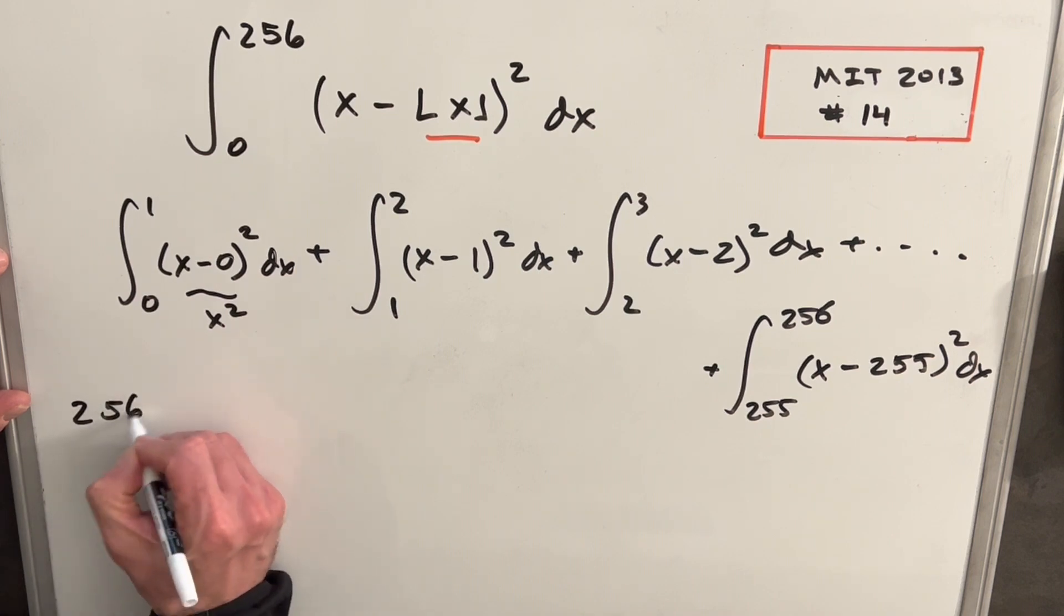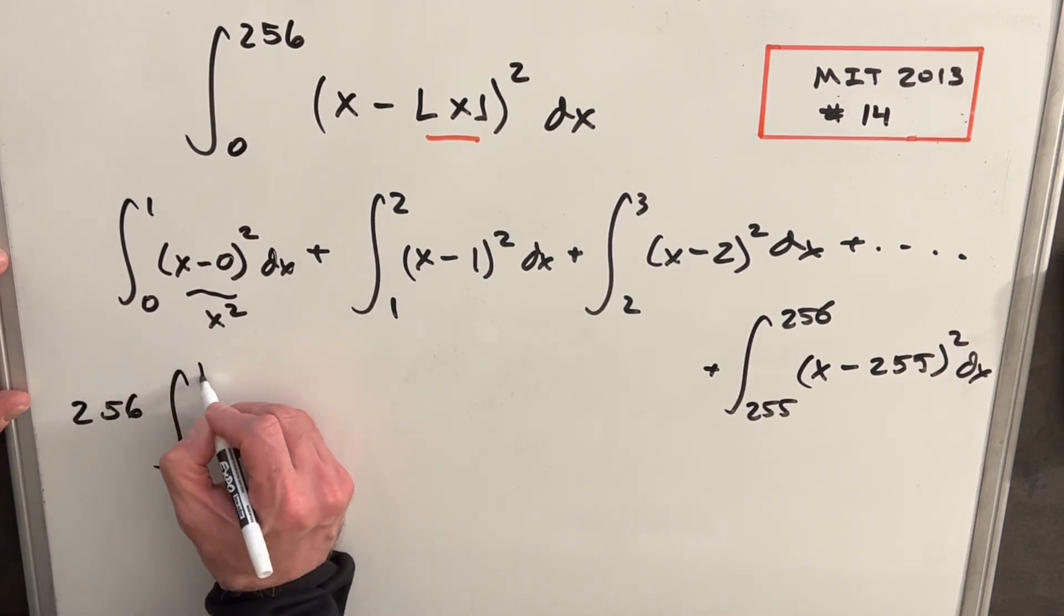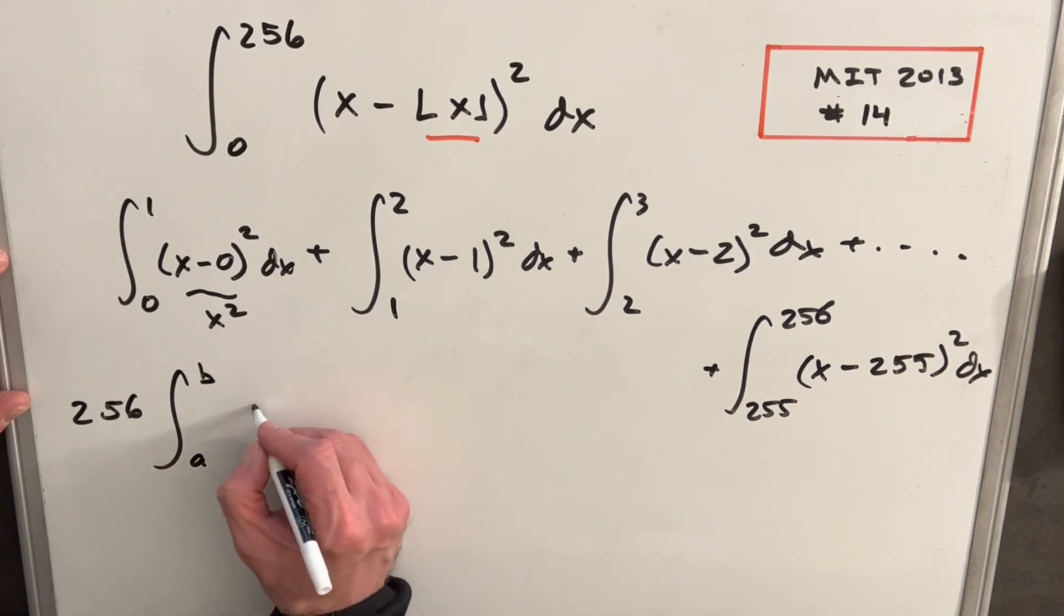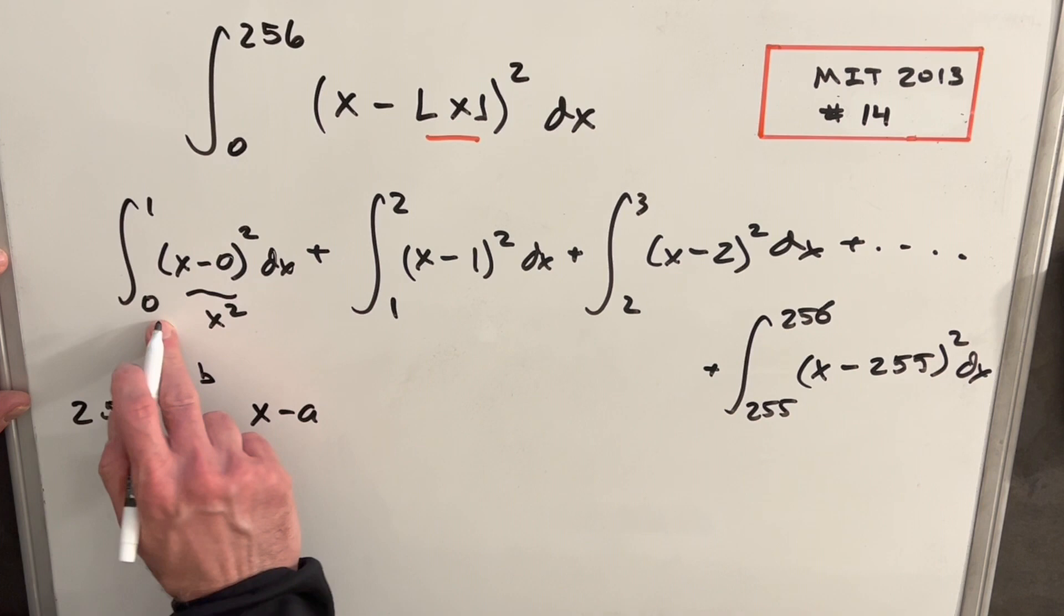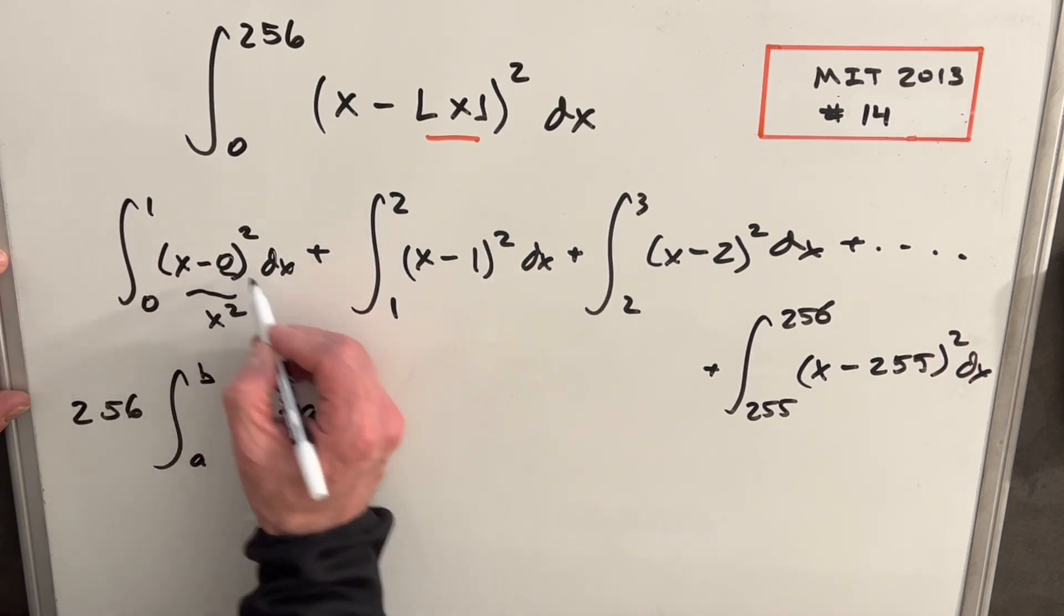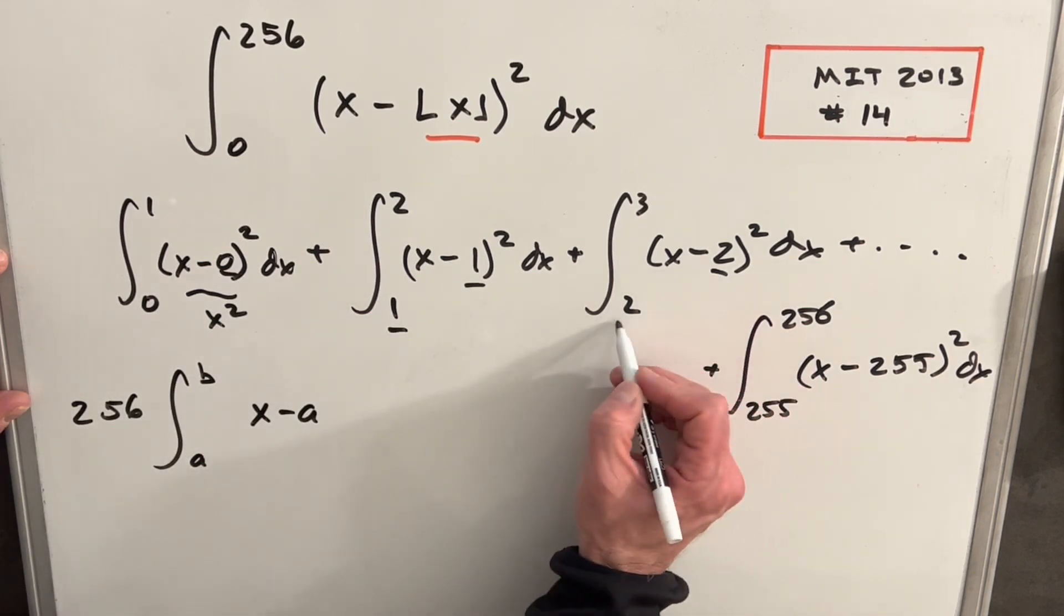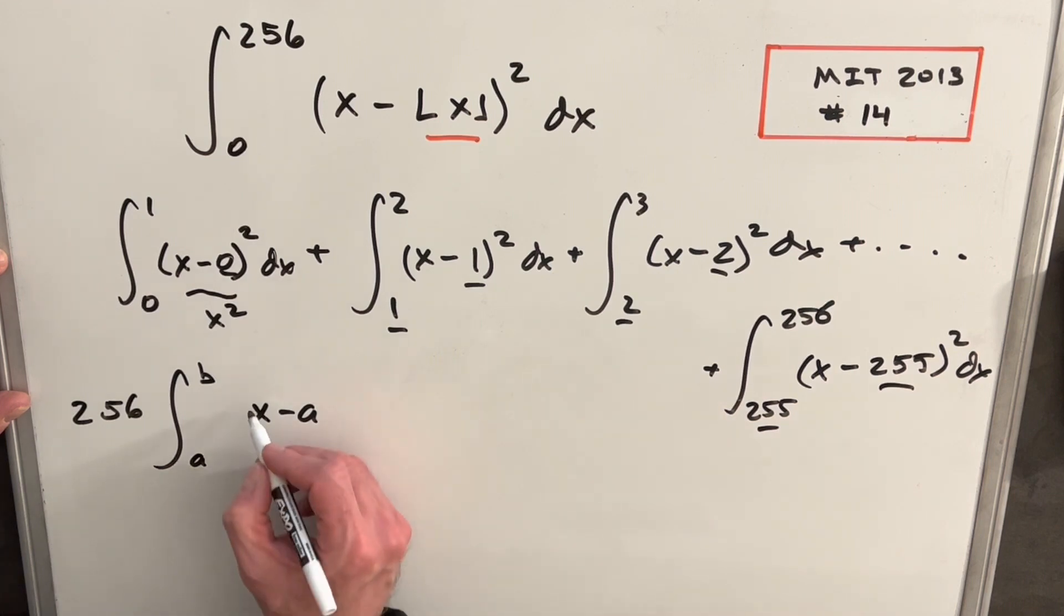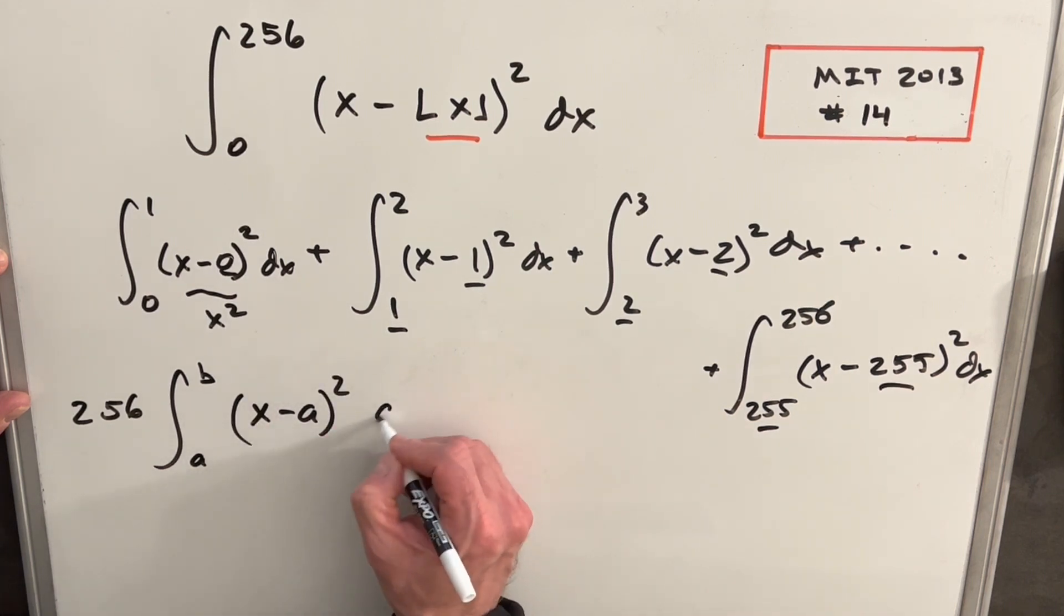So what I want to do is rewrite this in a more general form. We're going to have 256 of these integrals taken from some b to a of x minus a. Notice that this value here always equals our lower bound. So we're going to have x minus a squared dx.